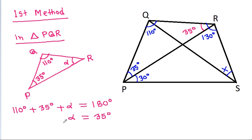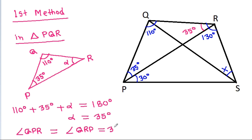Now we have angle QPR equal to angle QRP, that is 35 degrees. That means QP will be equal to QR, so QP equals QR.